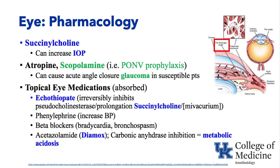Regarding topical eye medications: if a patient with eye disease is taking topical medications, realize that they can be absorbed systemically. Beta blockers can cause bradycardia and bronchospasm. Phenylephrine can increase blood pressure. There's one called echothiophate that some glaucoma patients take as a topical eye medication — it irreversibly inhibits the enzyme pseudocholinesterase, which breaks down succinylcholine. So if echothiophate is irreversibly inhibiting that enzyme and you give succinylcholine, you can have prolonged paralysis from succinylcholine. Mivacurium is also affected, though that is mainly a historical discussion.